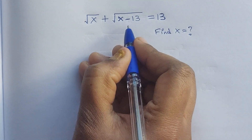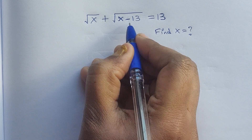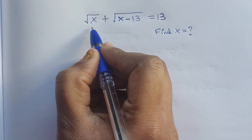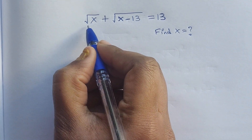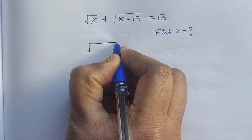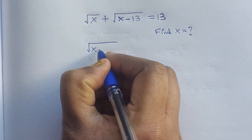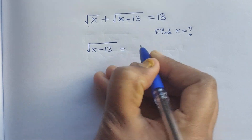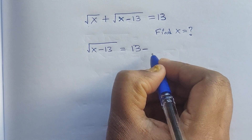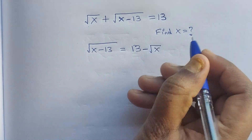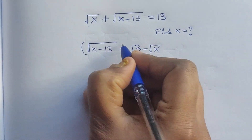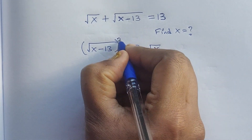So: √x + √(x - 13) = 13. I'm moving the square root of x to the right side, giving: √(x - 13) = 13 - √x. Now I'm applying squares to both sides.